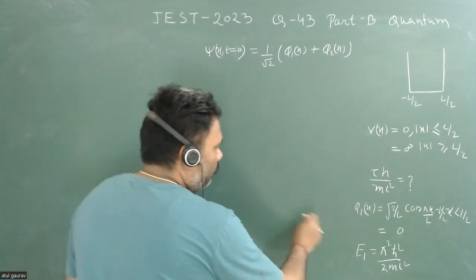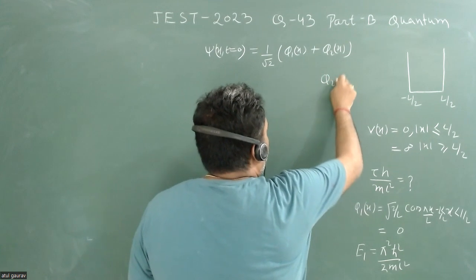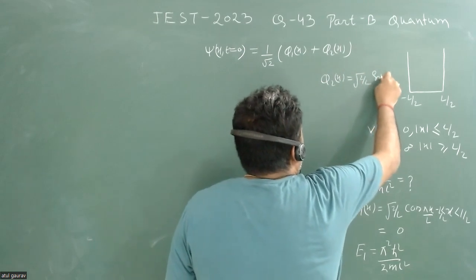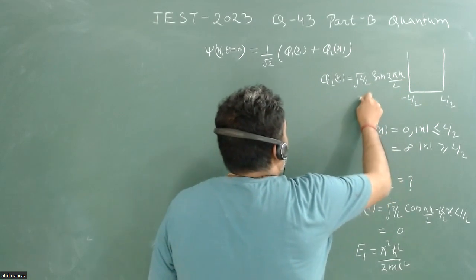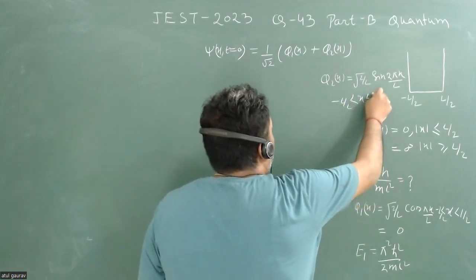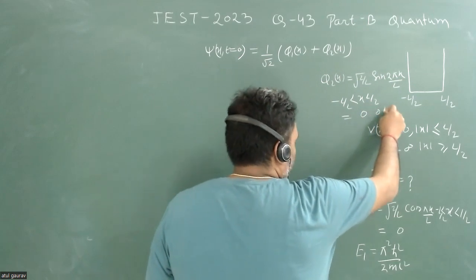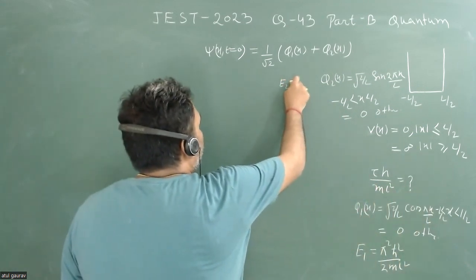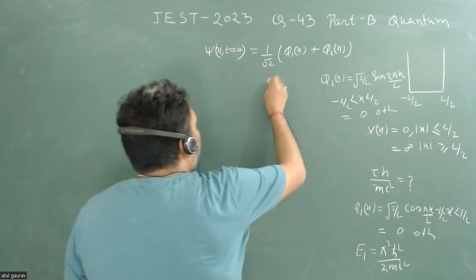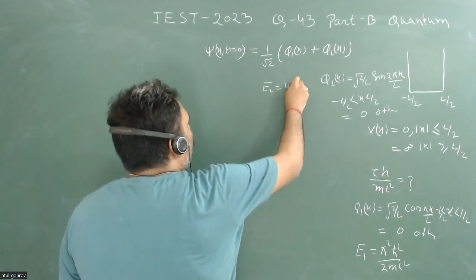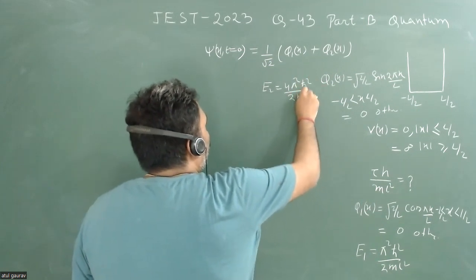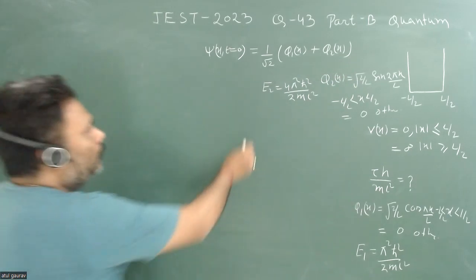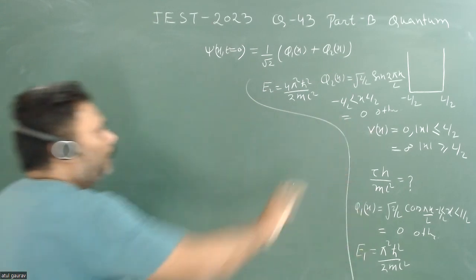Similarly, φ2(x) = √(2/L) sin(2πx/L) for x between −L/2 and +L/2, and zero otherwise. The associated energy E2 = 4π²ℏ²/(2mL²). This is the information we need to collect before approaching the problem.